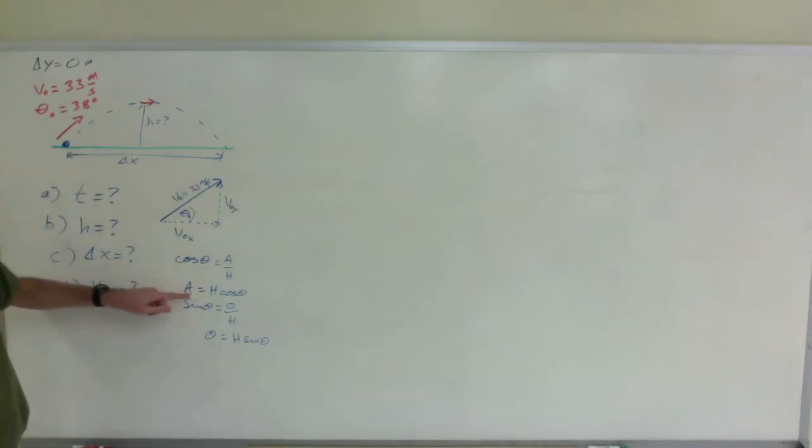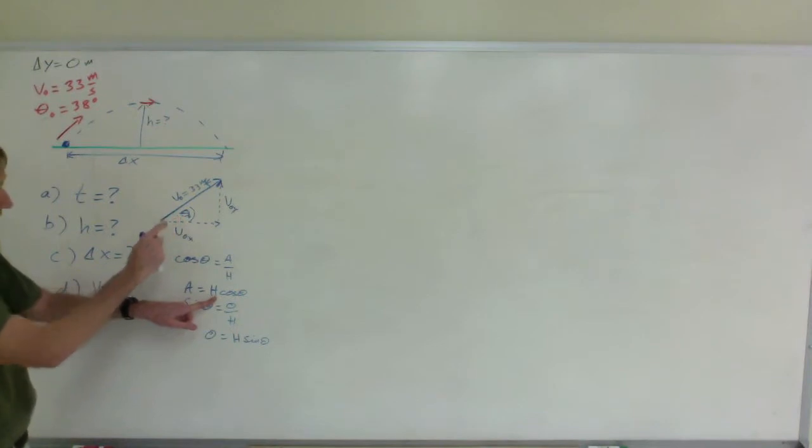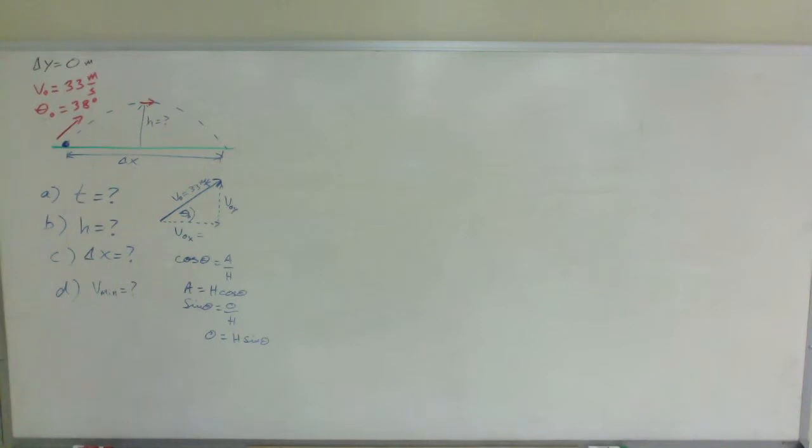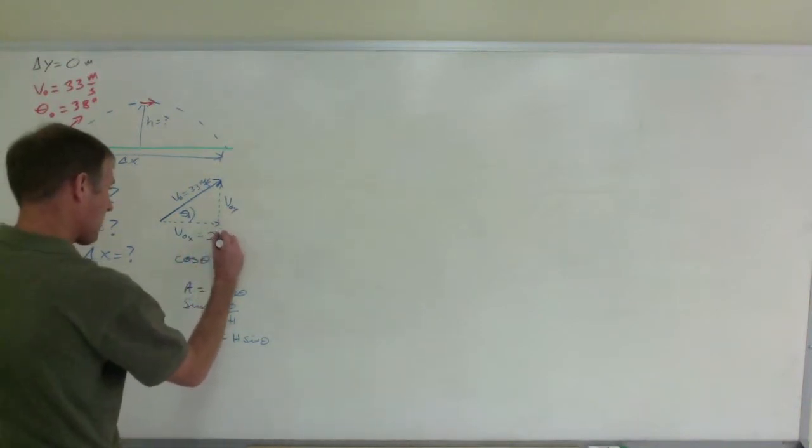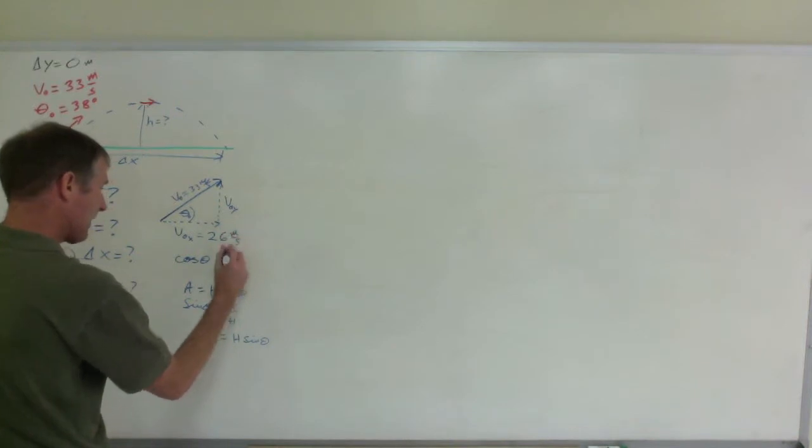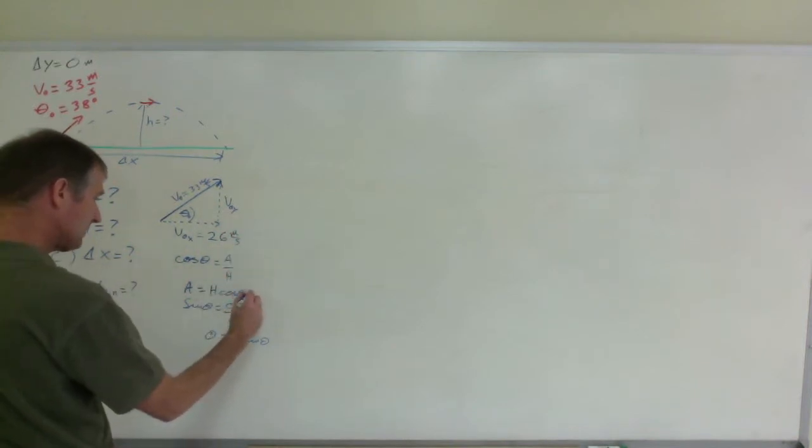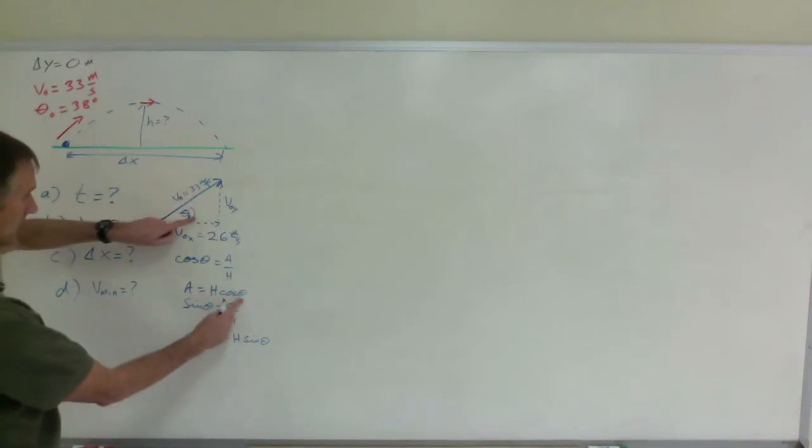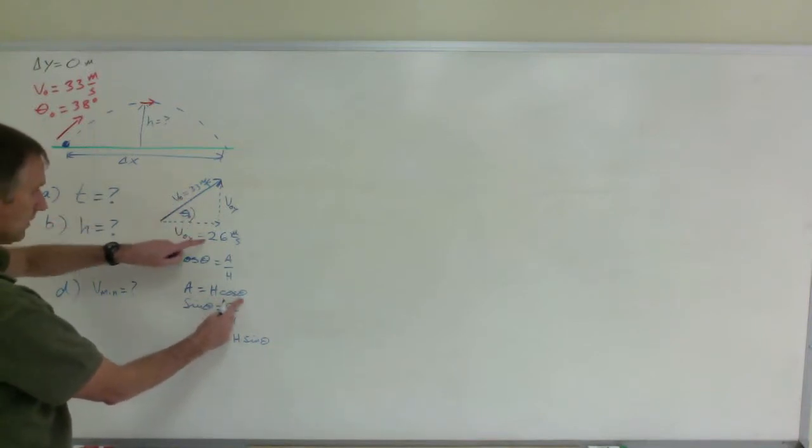So to find this adjacent side, multiply 33 times the cosine of 38 degrees. That will give us this value here for v sub zero x. I have already done that, and it came out to be 26. Again, that is the hypotenuse 33 times the cosine of 38 degrees. You get 26.